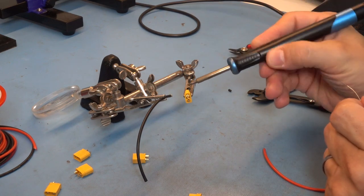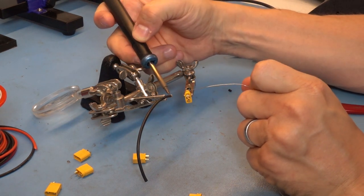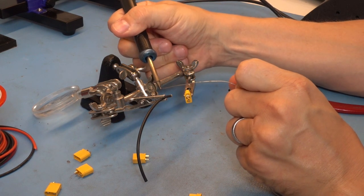Then with the solder and the iron—this is my iron, the tip is about the same size as the tip of the connector—you heat up the underside of the wire with a little bit of solder on the tip of the iron.